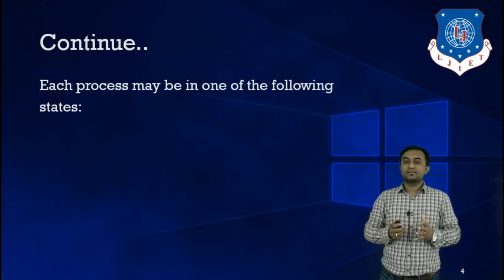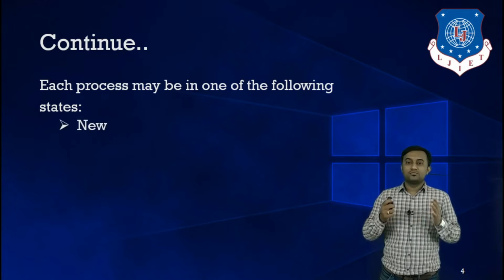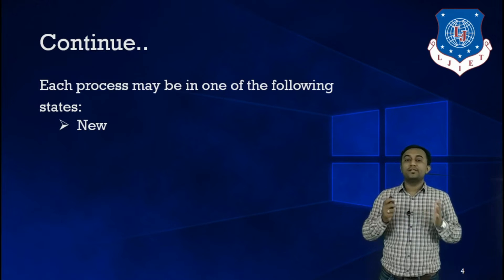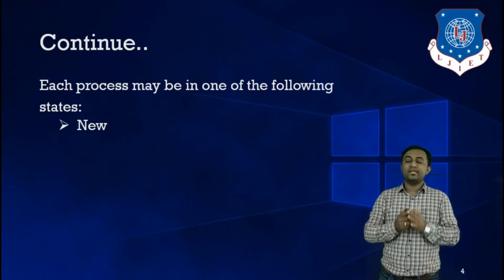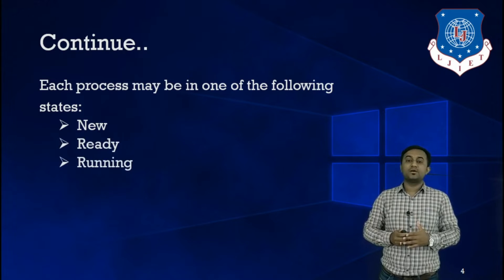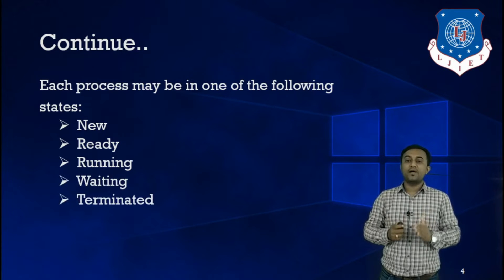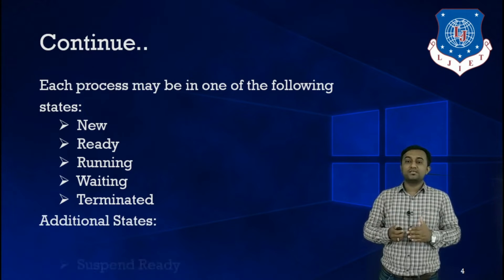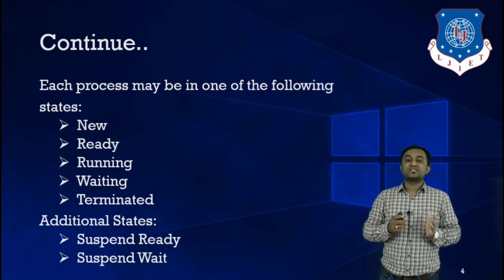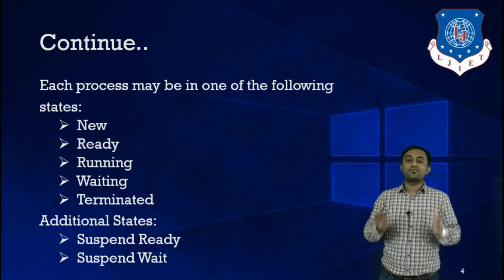Each process may be in one of the following states during its lifespan. There are seven states in total. Out of these seven, five are basic states and the remaining two are additional states. The five basic states are: New, Ready, Running, Waiting, and Terminated. The two additional states are Suspend Ready and Suspend Wait.